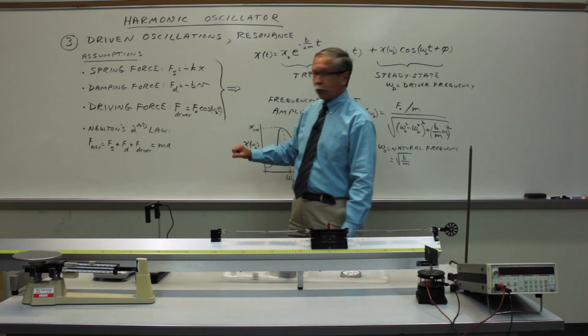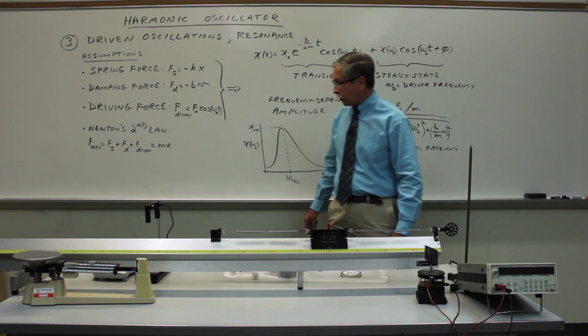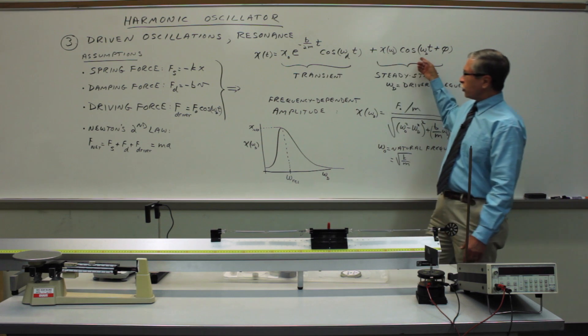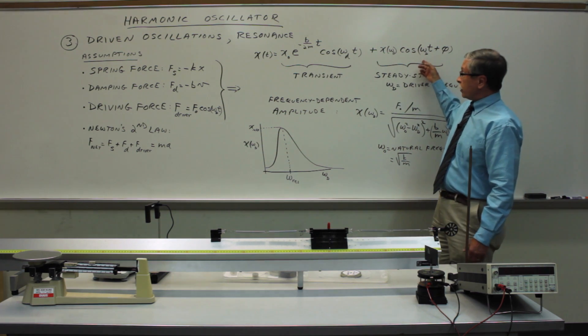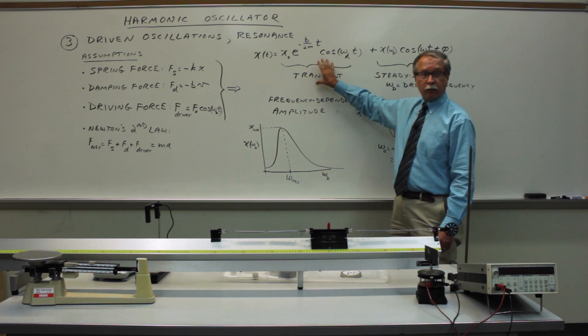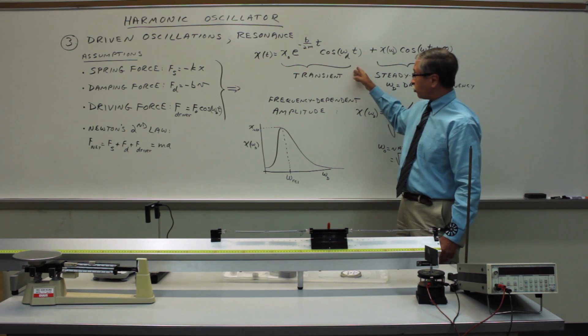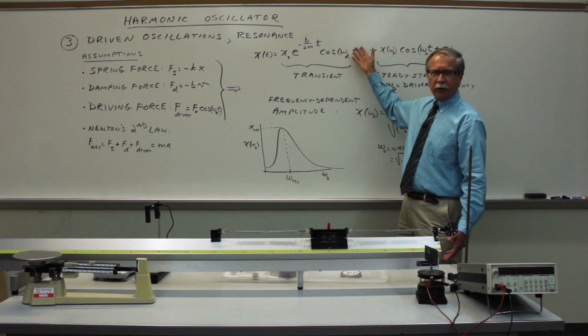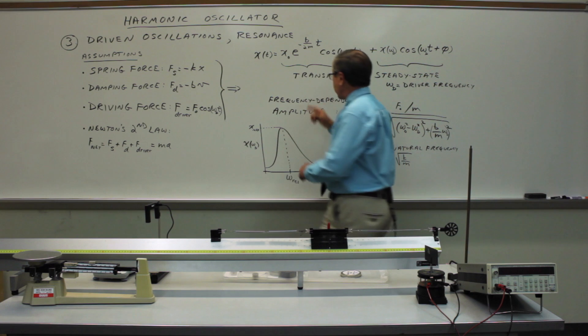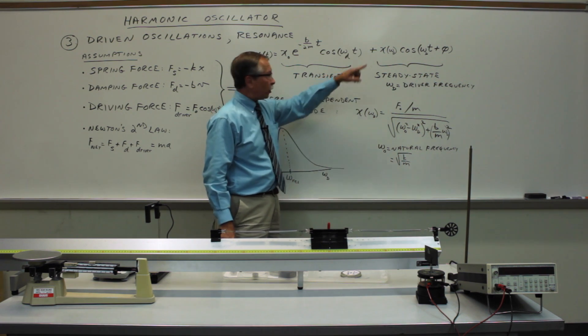Put all three of those forces together according to Newton's second law and the result is the mass times the acceleration. With all of those assumptions, we get a general solution to the differential equation, which has two pieces to it. This part you'll recognize from last time. It's exactly the same form as the damped oscillations. If you wait long enough, this part of the solution goes away. It just dies out exponentially. What remains and what we're going to investigate today is the steady state portion of the solution.